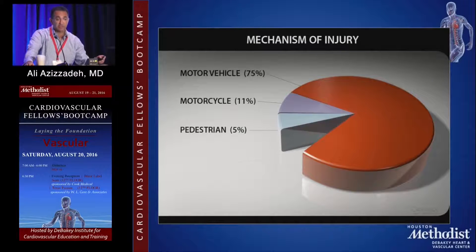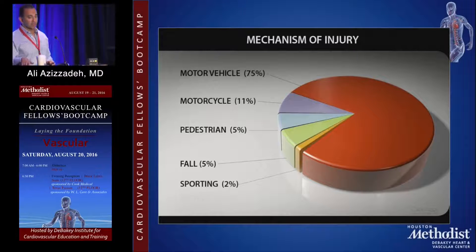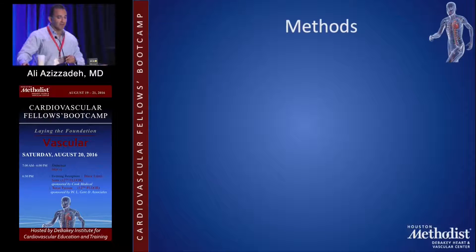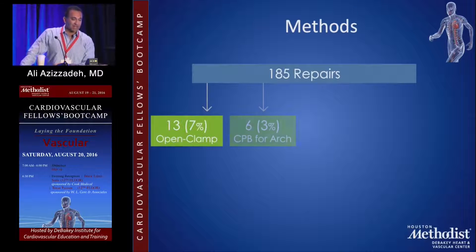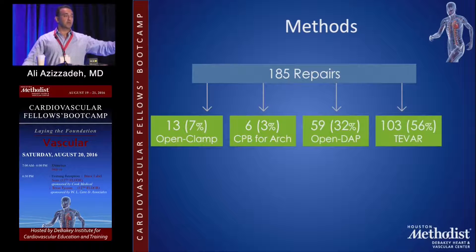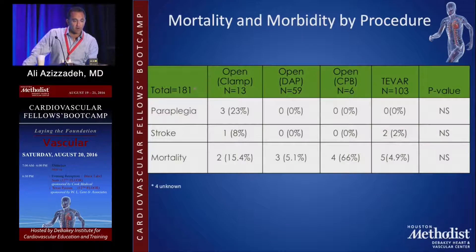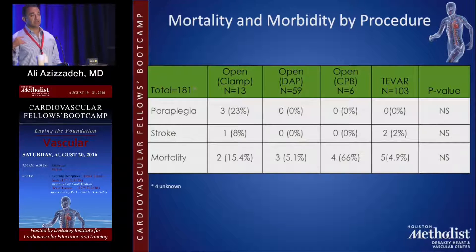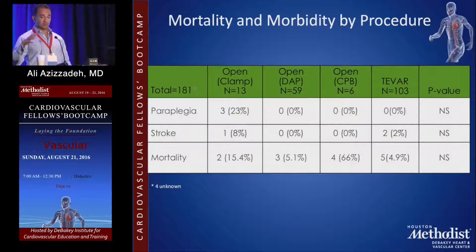The majority of injuries were from motor vehicle collisions, motorcycles, and pedestrians — and one patient whose parachute didn't open but survived. Breakdown of repairs: 7% had open cross-clamp and go, 3% had cardiopulmonary bypass for arch repair, 32% had distal aortic perfusion — primarily before the TEVAR era — and 56% had TEVAR. Mortality: cross-clamp and go 15.4%, distal aortic perfusion open repair 5.1%, cardiopulmonary bypass (arch/ascending injury) 66%, and TEVAR 4.9%.